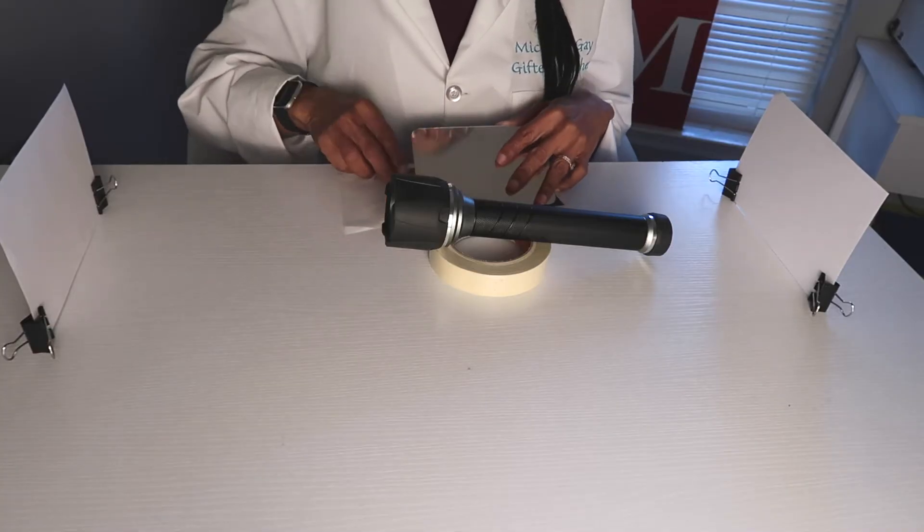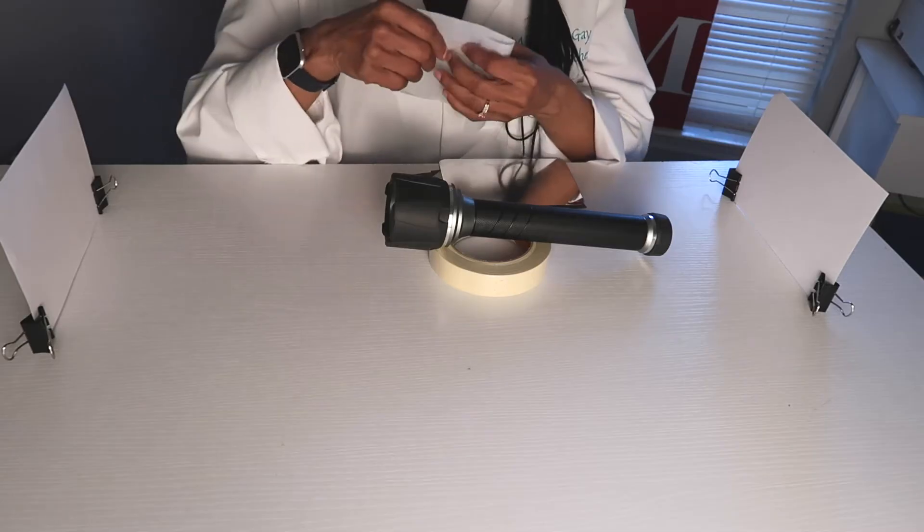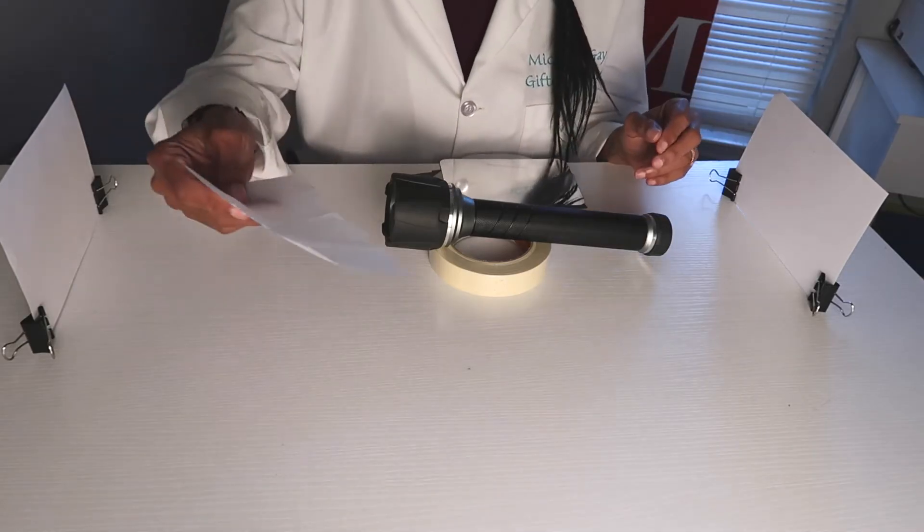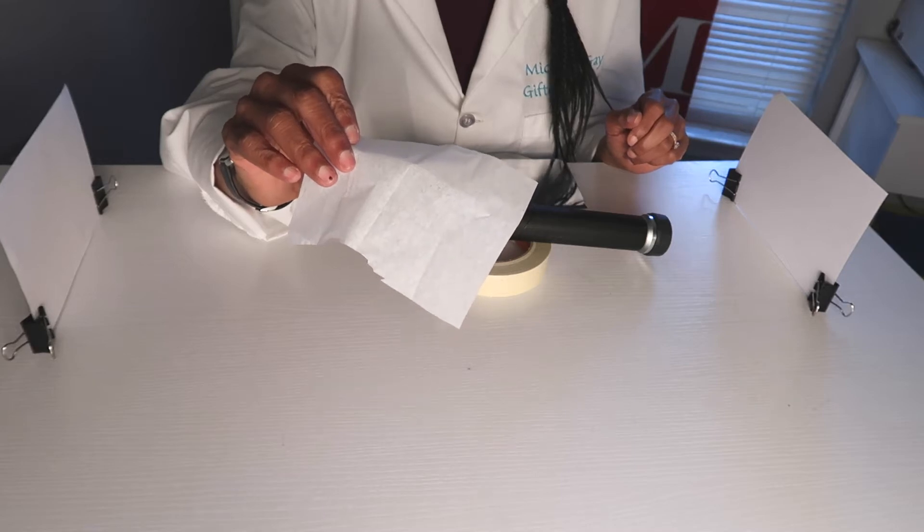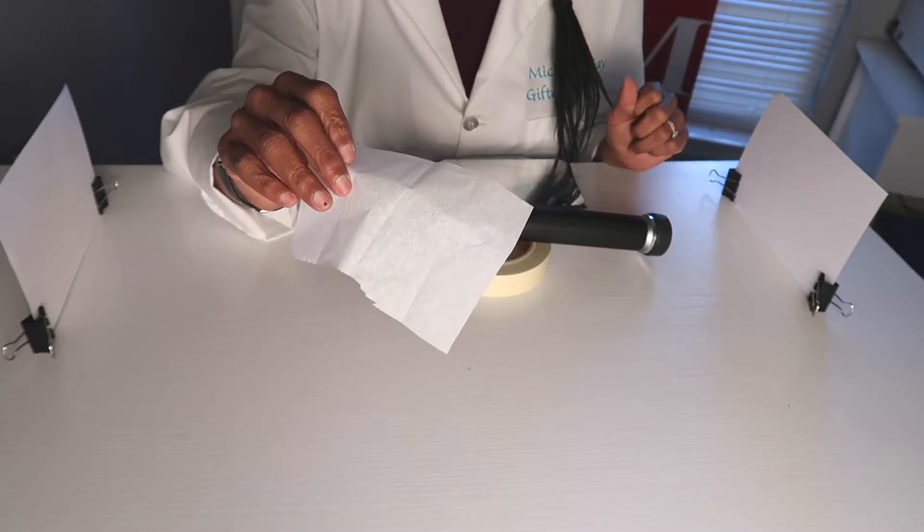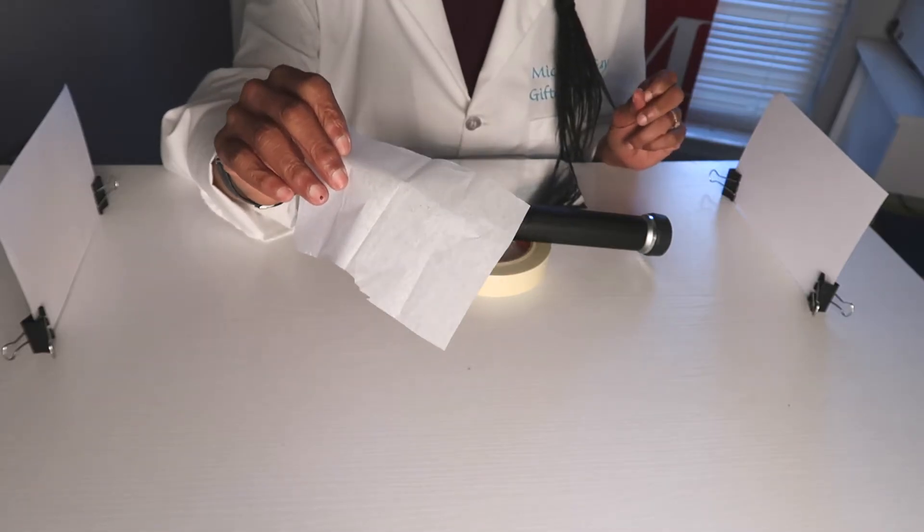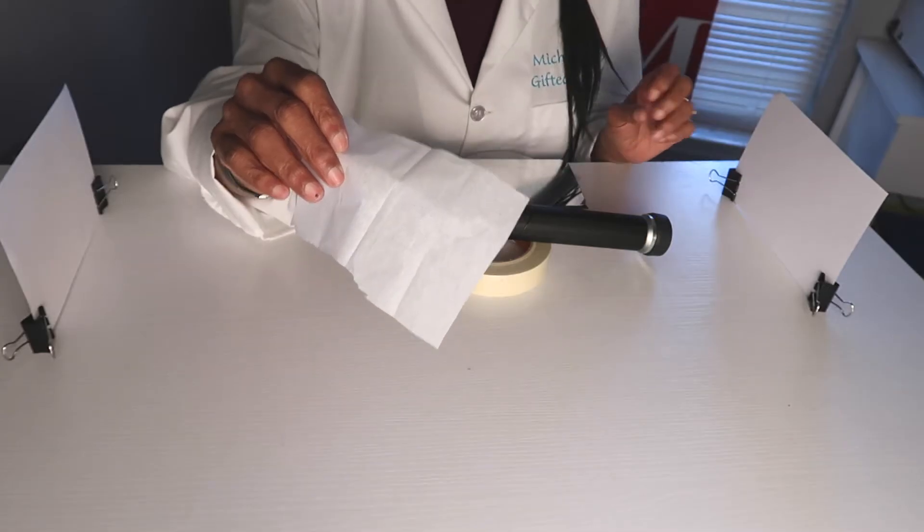First, we're going to observe tissue paper. Now, tissue paper would be considered translucent. Translucent materials allow some light to pass through, not all of it, but some light.